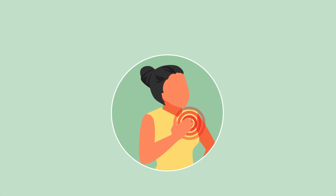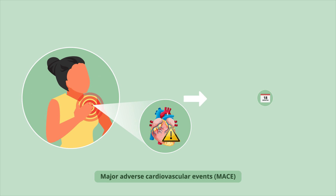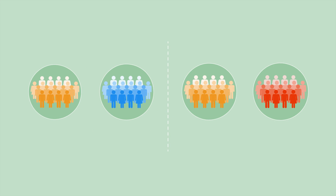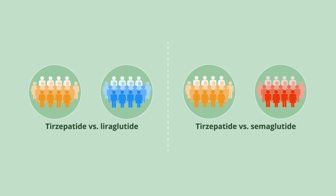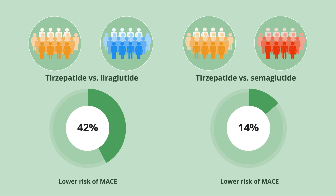Researchers assessed rates of major adverse cardiovascular events over 18 months. Results indicated that trisepatide significantly reduced the risk of major adverse cardiovascular events compared to the other therapies, lowering the risk by 42% compared to loraglutide and 14% compared to semaglutide.